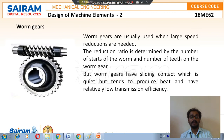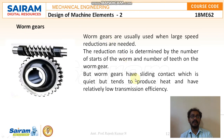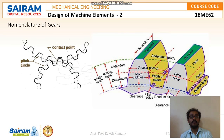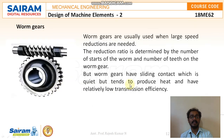Worm gears are usually used when large speed reductions are needed. The reduction ratio is determined by the number of starts of the worm and the number of teeth on the worm gear. Worm gears have sliding contact, which is quiet but tends to produce heat and has relatively low transmission efficiency.